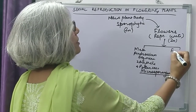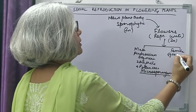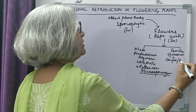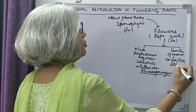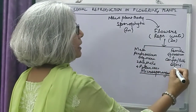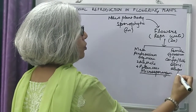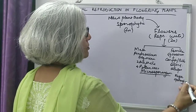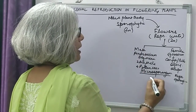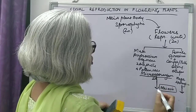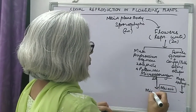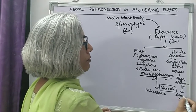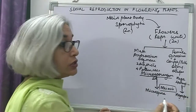The female part is called the gynoecium. It is made up of carpels or pistils, which have a swollen portion called the ovary. The ovary has ovules, and the ovule is called a megasporangium. All these have 2n number of chromosomes. The microsporangium undergoes meiosis to produce the microspore. The megasporangium undergoes meiosis to form the megaspore, which is also called the macrospore.